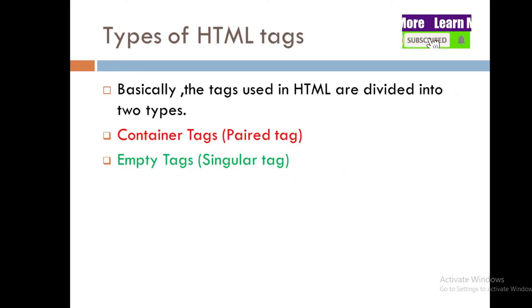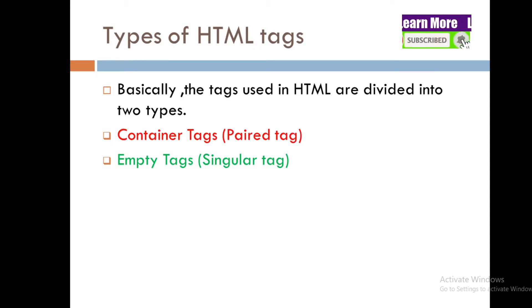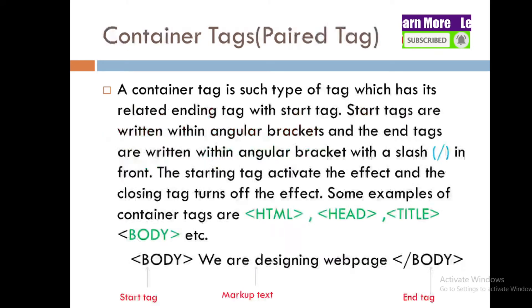There are basically two types of HTML tags: container tags, also called paired tags, and empty tags, also called singular tags.